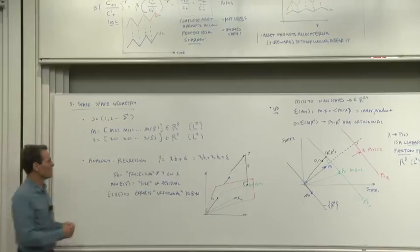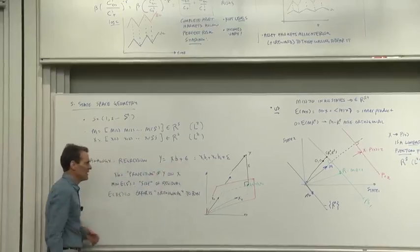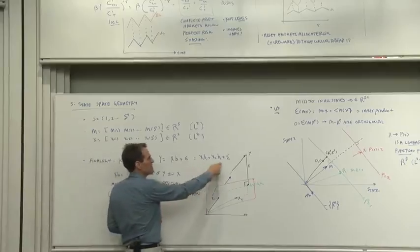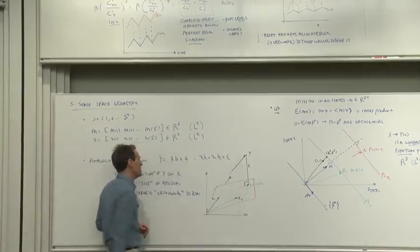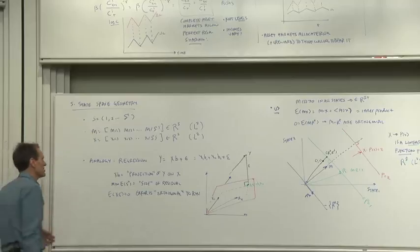Think about a regression. In a regression, we run a regression of y on x with an error term. And in particular, think of two different x's, x1 and x2, with an error term. And we use all sorts of geometric language to describe that.